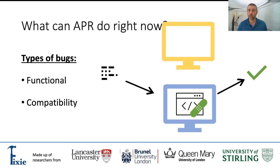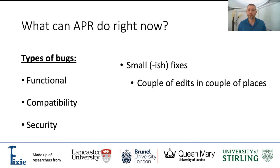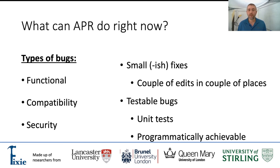APR can also deal with security bugs with the same techniques, as long as the fix is not too extensive — which is kind of the caveat of APR in general. It can easily deal with fixing bugs that require relatively small changes in a few places, and the bugs have to be testable. That is, there needs to be a mechanism, usually unit tests, that can tell the APR tool when the bug has been fixed.